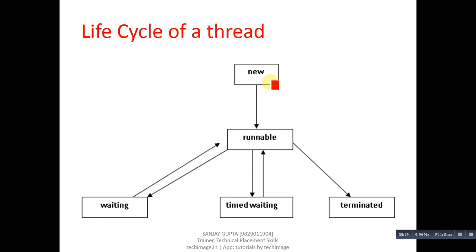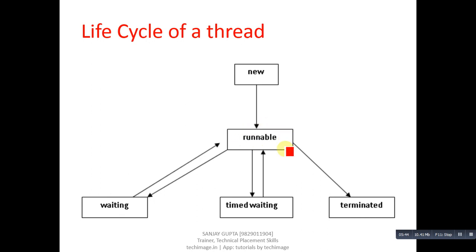To recap: New is the initial state of a thread. From New, it moves to Runnable for execution. From Runnable, it can transfer to Waiting, Timed Waiting, or Terminated. The Runnable state represents the thread's execution, while all other blocks define the remaining states. This lifecycle helps you understand the different scenarios of a thread in multi-threading in Java.